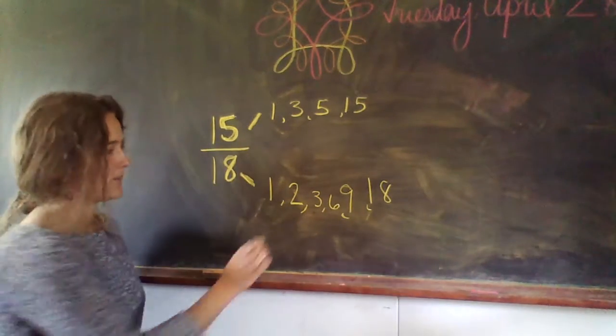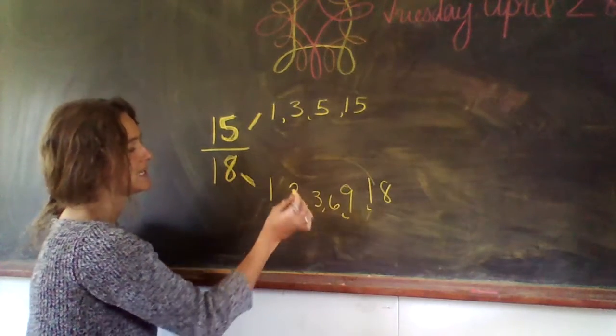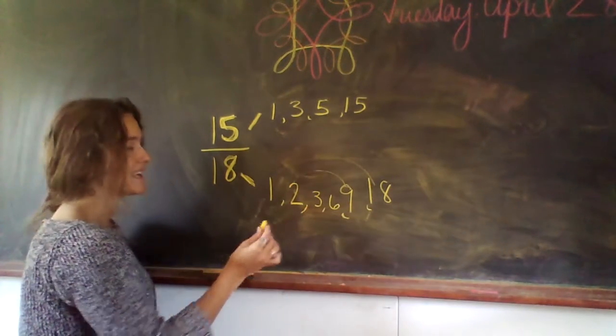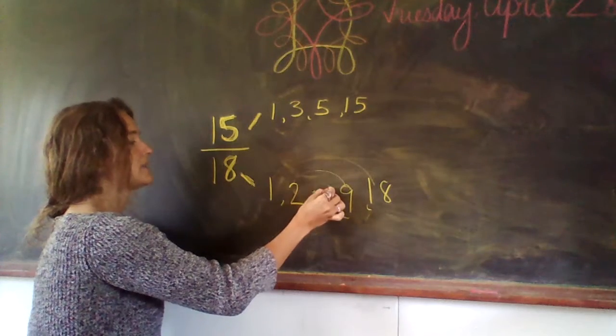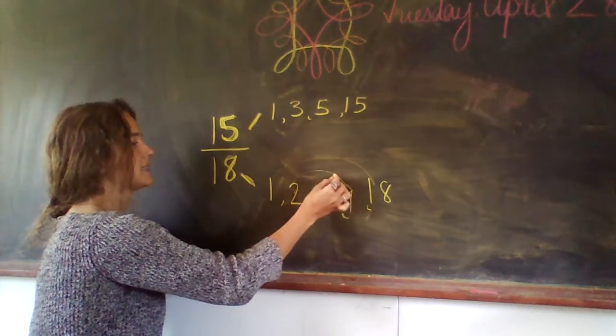1 times 18 is 18. 2 times 9 is 18. 3 times 6 is 18.